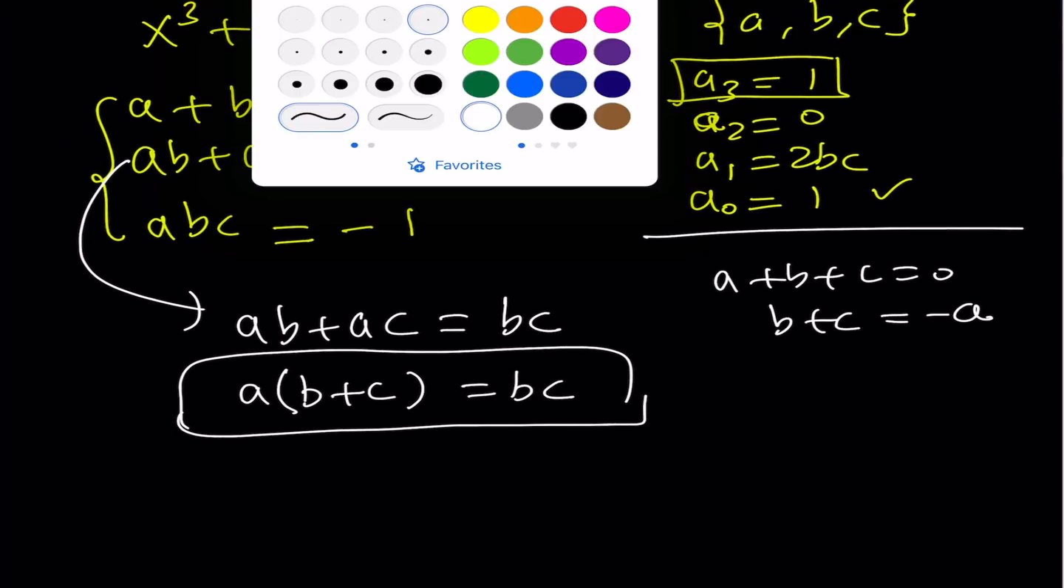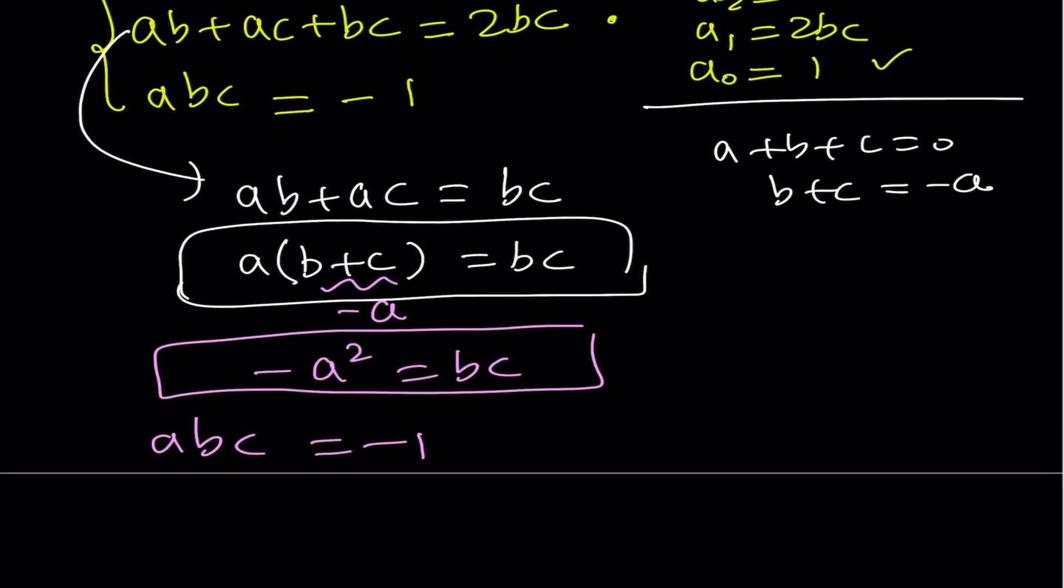Let's go ahead and substitute the value of b + c here, which is -a. And this is going to give me -a² = bc. But I'd like to write it as bc = -a². But let's go ahead and take a look at the third equation at this point. We do now know that abc = -1, right? And we got this equation here. bc can be written as -a², right? So I can replace bc with -a². And there you go. This is going to give me the value of a.